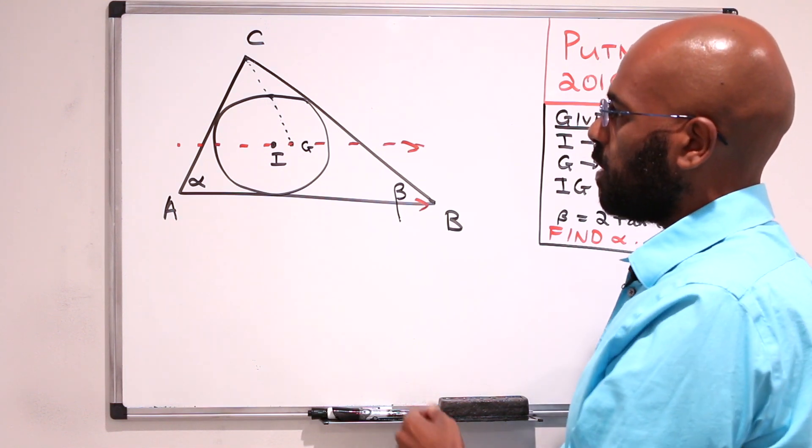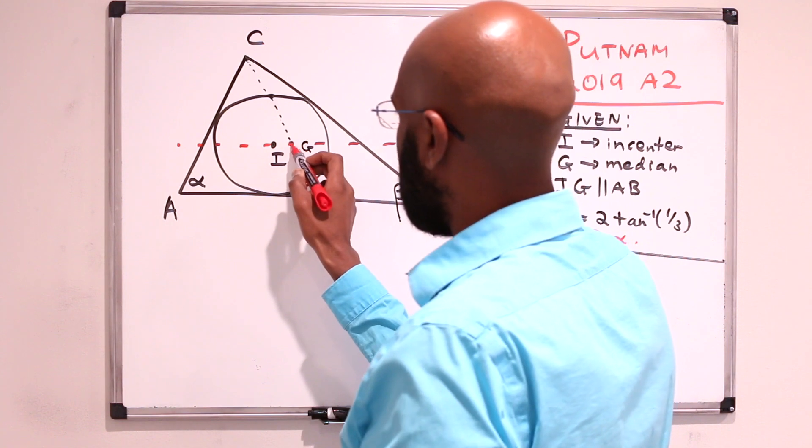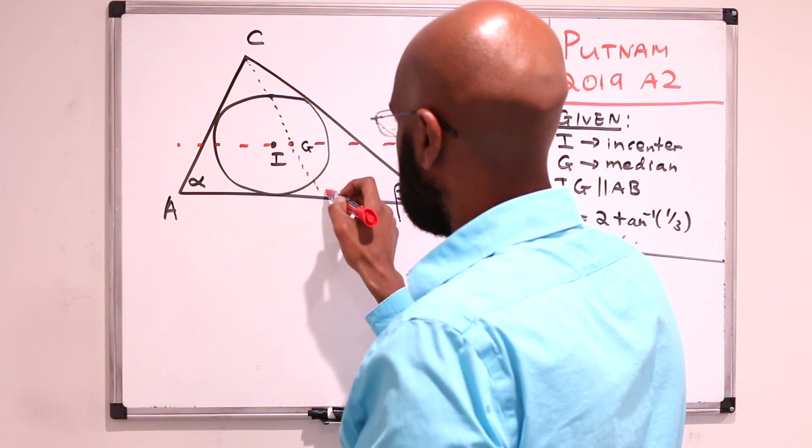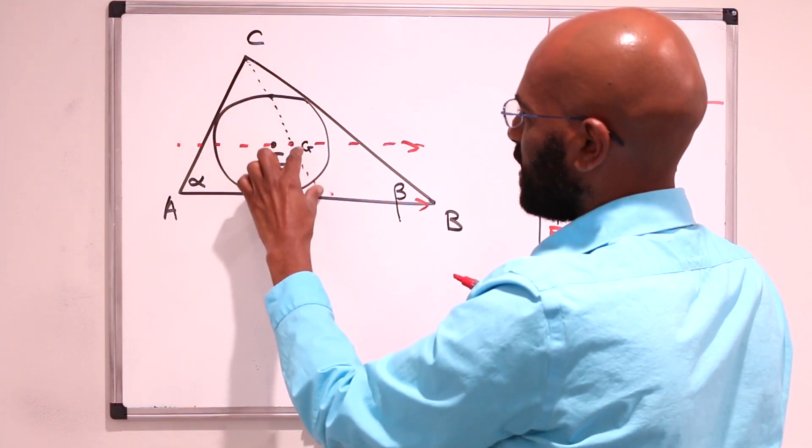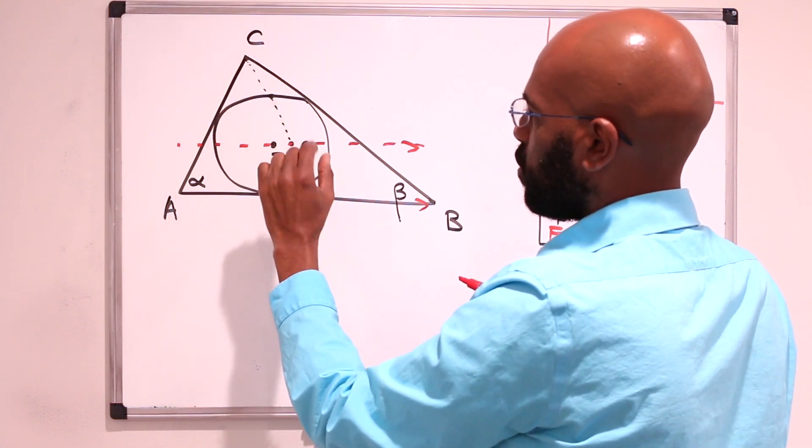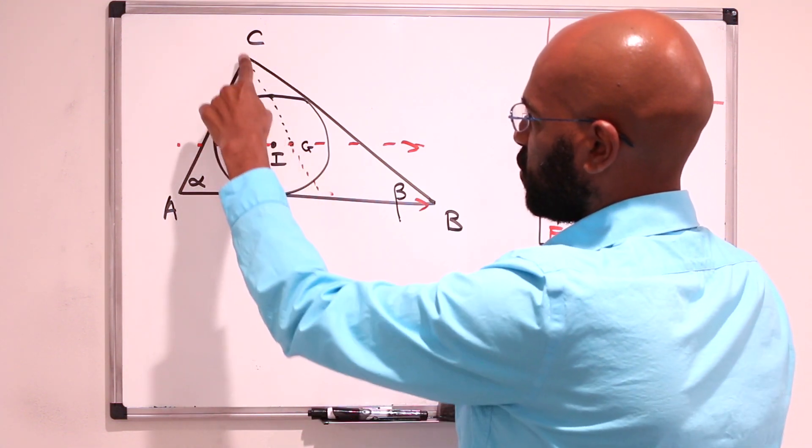So first of all, one fact about the median is if we extend it out to this other side, then this length is actually twice this length, or in other words, this length is a third of this total length.